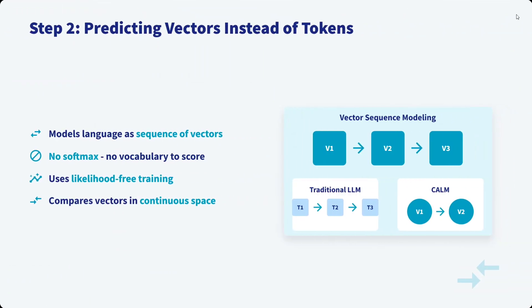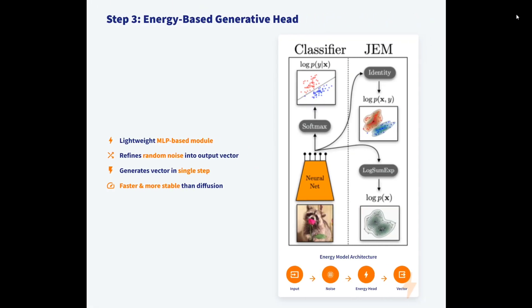The second step is predicting vectors instead of tokens. The model treats language as a sequence of vectors rather than a sequence of tokens. As you can see on the screen, vector sequence modeling is happening: V1, V2, V3. One important point — they won't be using any softmax because there is no probability being calculated. They use likelihood-free training and compare vectors in continuous space.